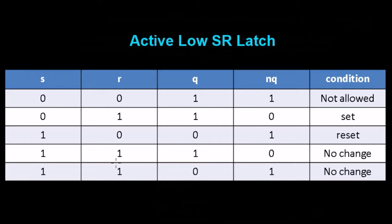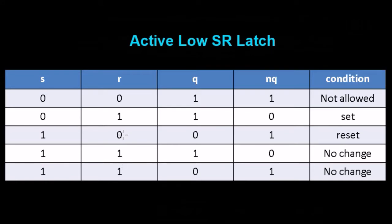Let's look at the condition where S and R are both 1,1. Take the case where Q is 1 and NOT-Q is 0. If we jump to the 1,0 condition, our S would have changed from 1 to 0, and in that case we don't get any change on the output. But if we were in this condition and R changes from 1 to 0, we would toggle because Q would now be 0 and NOT-Q would be 1. That's a little complex, so take your time and maybe rewind the video.